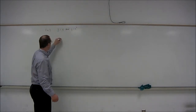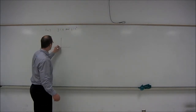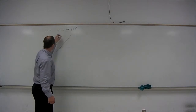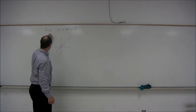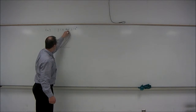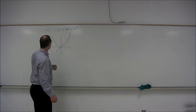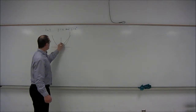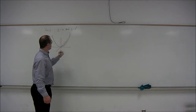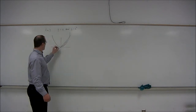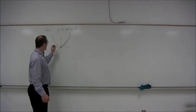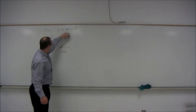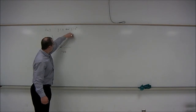Let's make a little graph. y equals x is the 45 degree line, and y equals x squared is a parabola. The intersecting points are the origin and the point (1, 1).